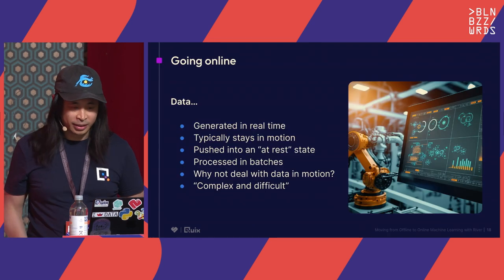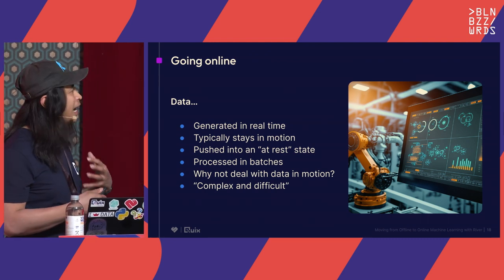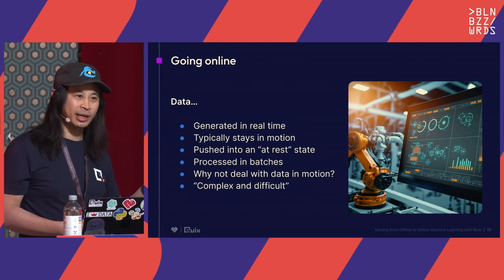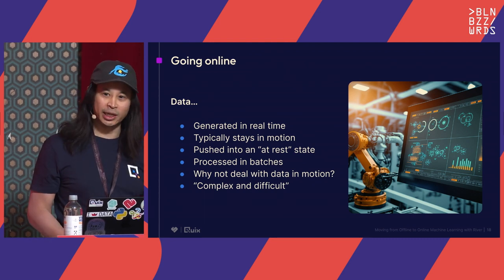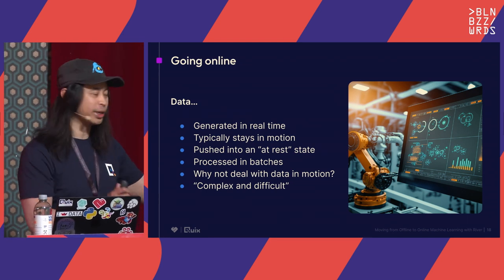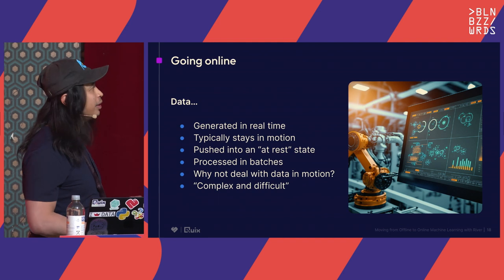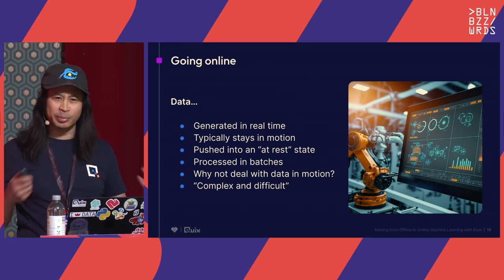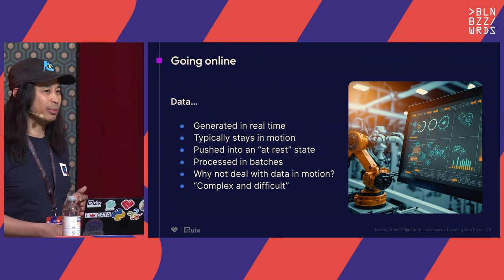On to online or streaming machine learning. Think about how data actually works conceptually: that data is probably generated in real time — a click stream, an event, a measurement from a sensor. It typically stays in motion, and then it's pushed into an at-rest state — into a database or cloud storage — and scheduled to be processed in batches. So the question is, why don't you deal with data while it's in motion? The answers I always get are that it's complex and difficult. Kafka and distributed systems are hard, and thinking with time — thinking in four dimensions — is really difficult for us as humans.